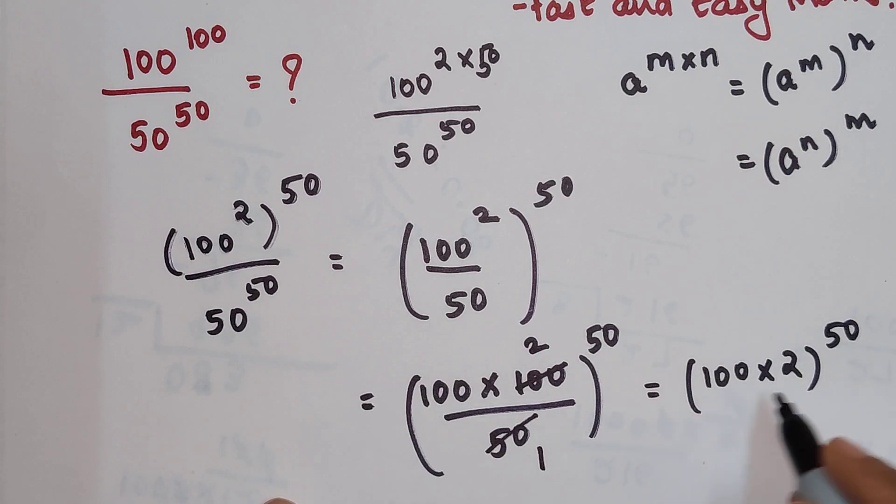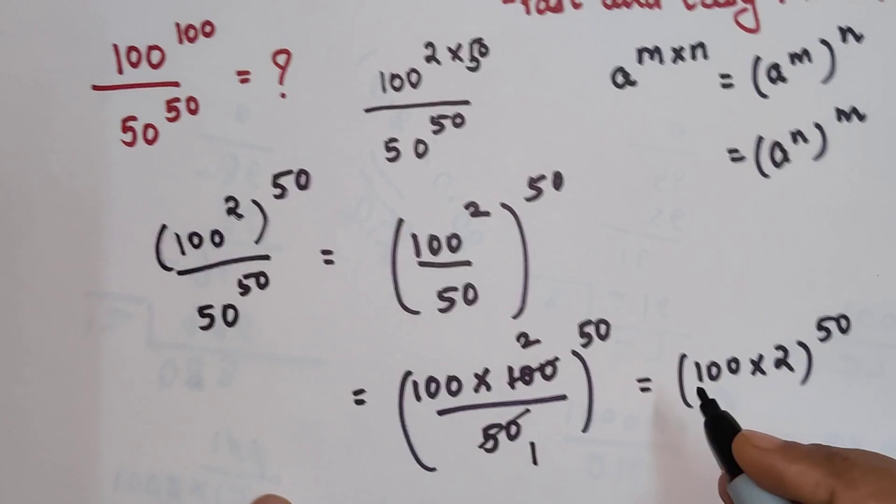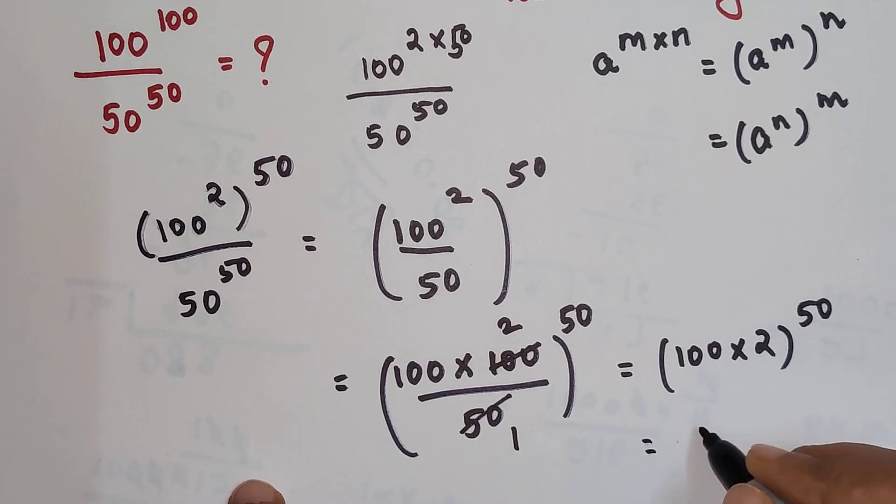Now since both of these numbers are raised to the same power, I can write this as nothing but 200 raised to 50.